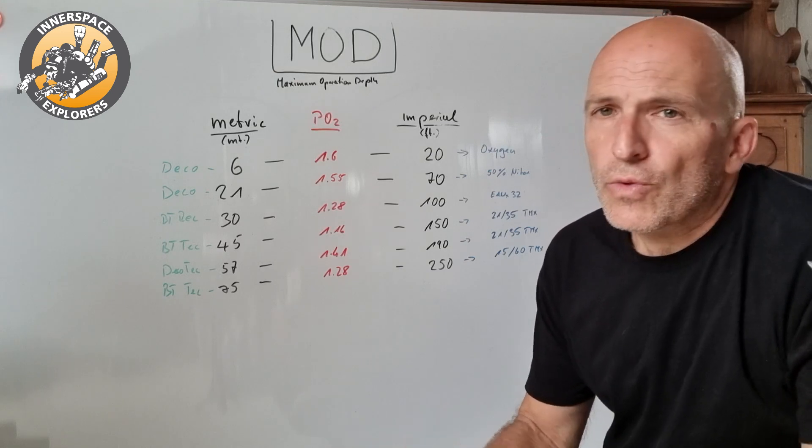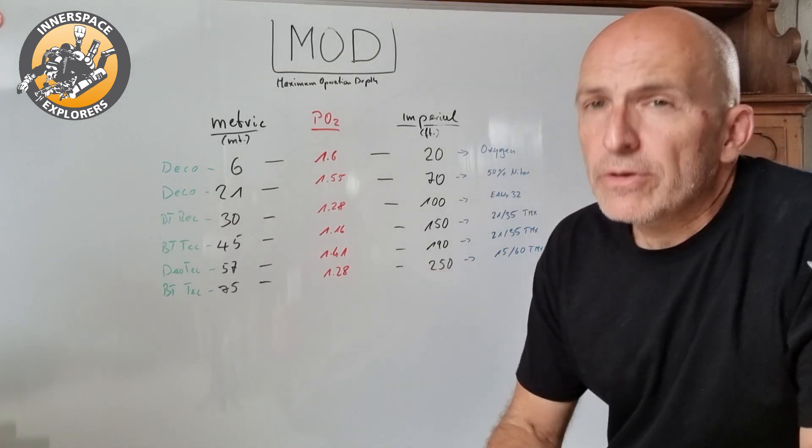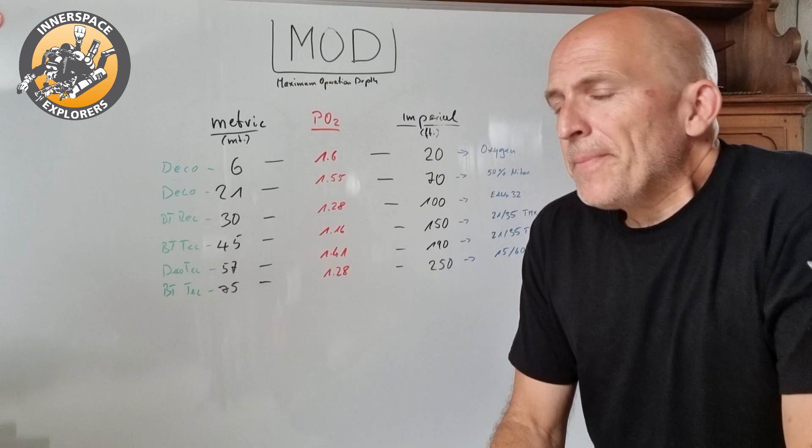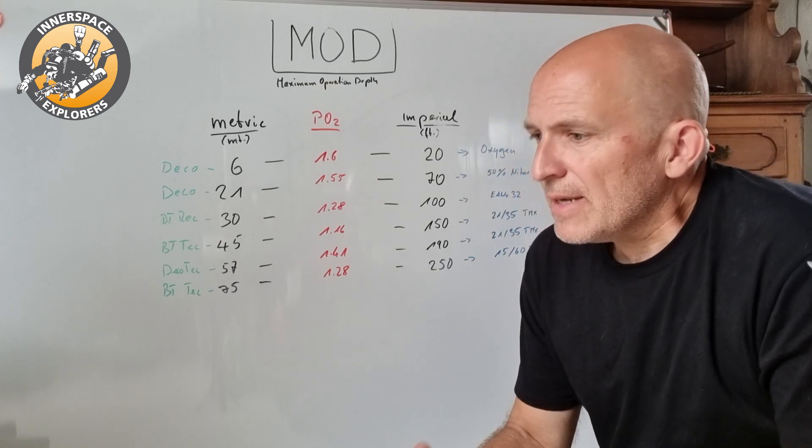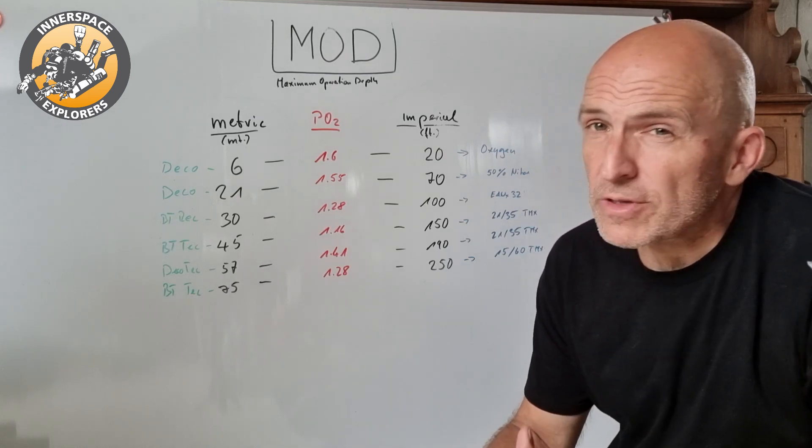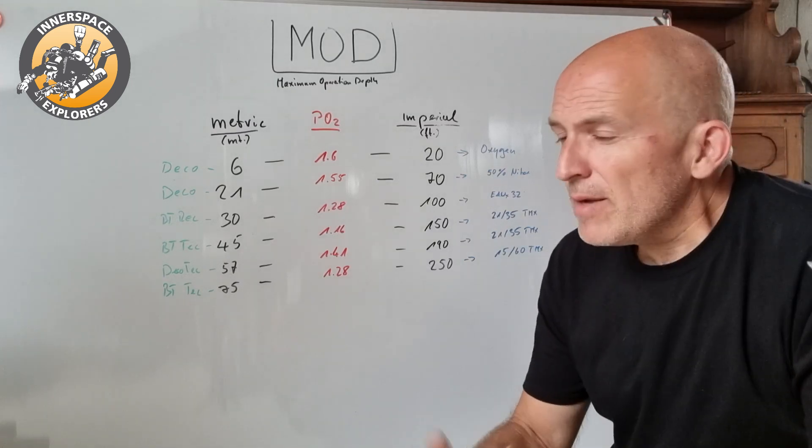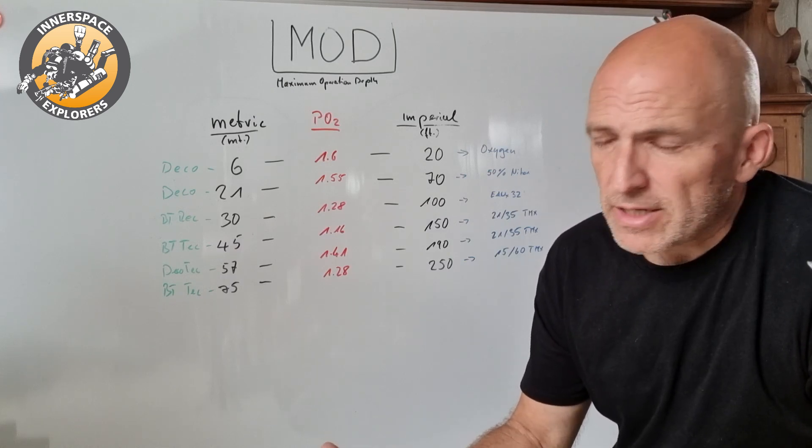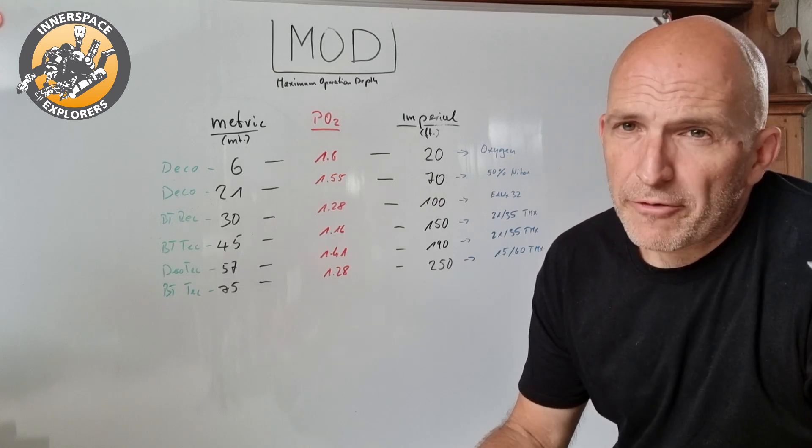We defined that we do not want to go deeper than 30 meters with Nitrox 32, and that gives you a PO2 of roughly 1.3, so 1.28. That is basically the PO2 that I do not want to exceed in my recreational diving. I don't want to go to that edge of 1.6 in recreational diving also because it limits my time.